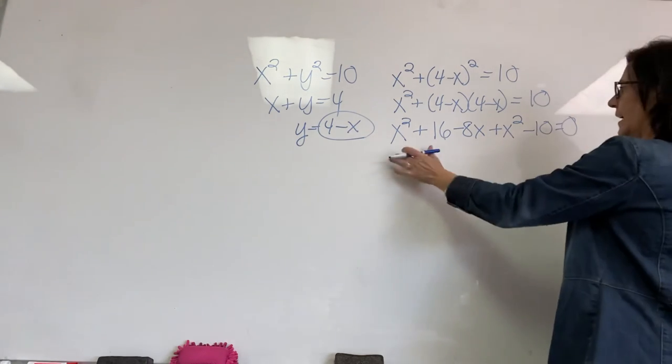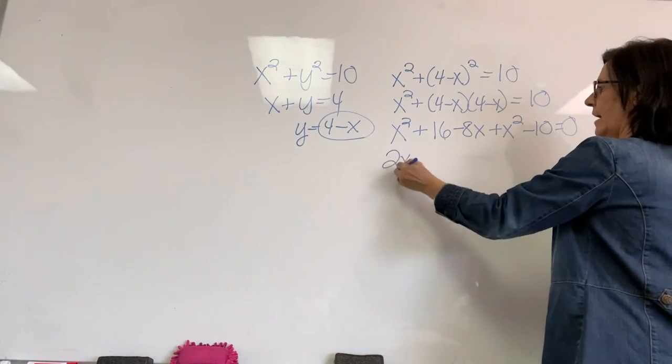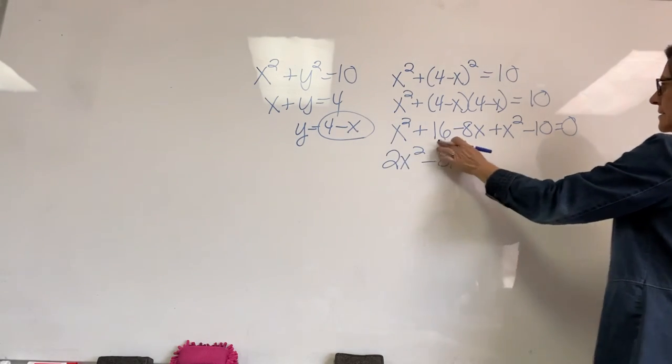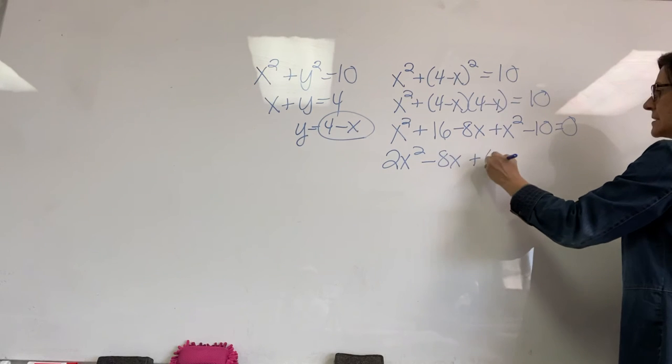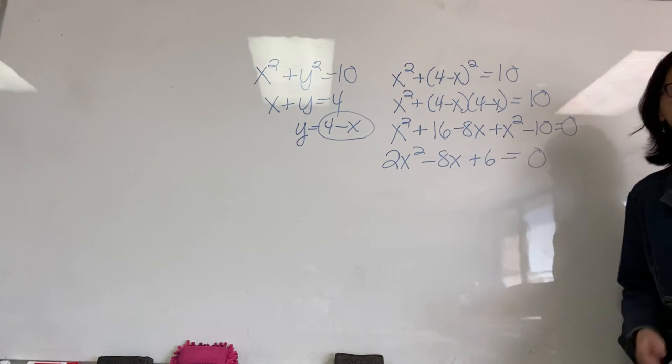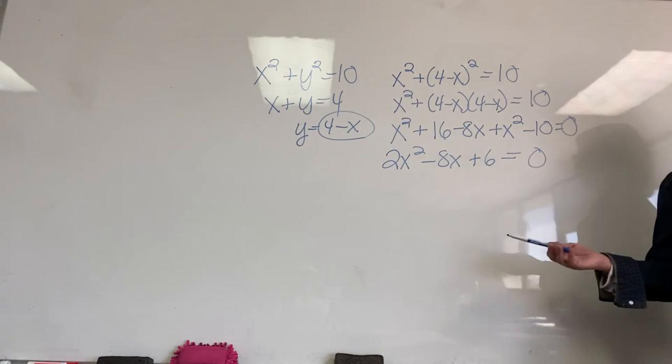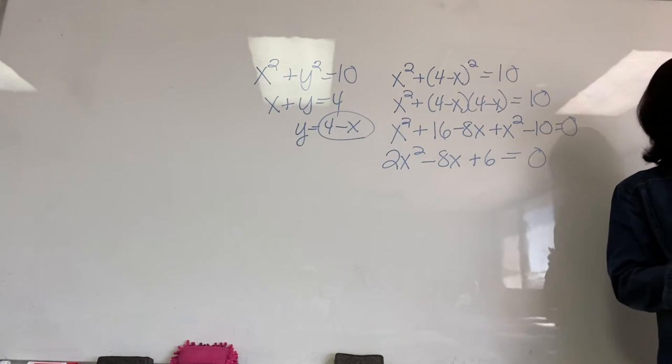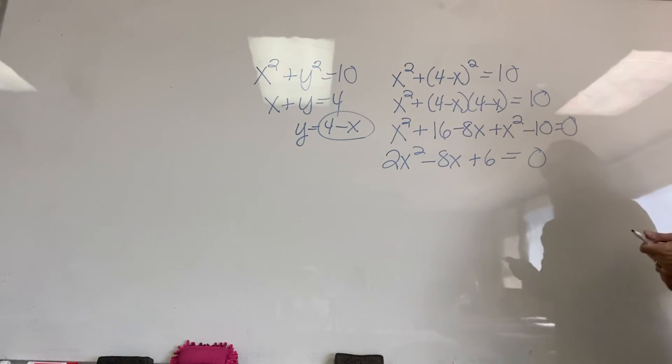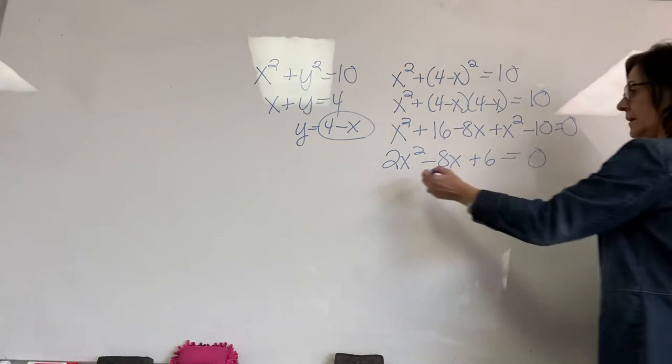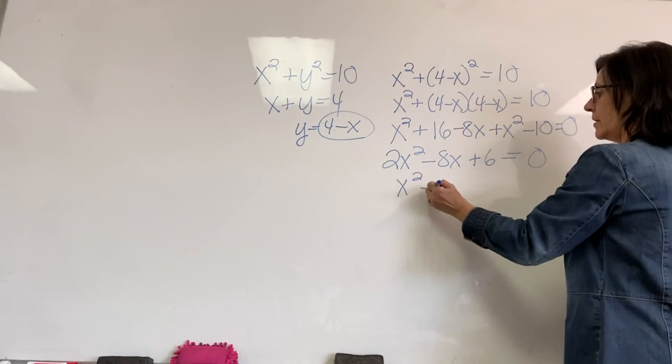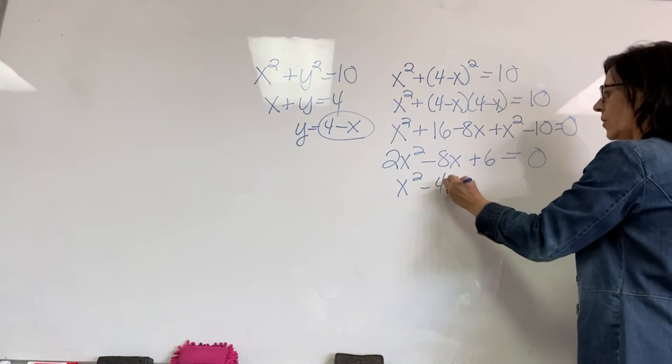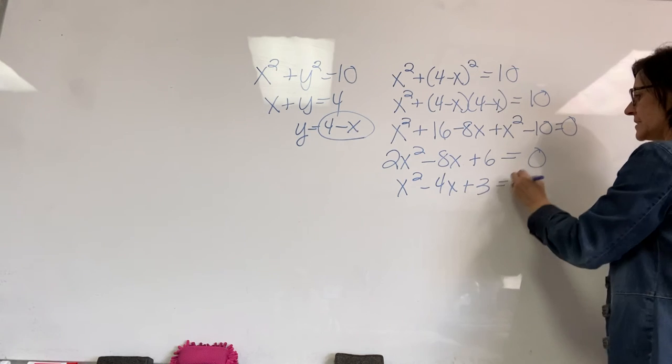I'm going to move that 10 over through subtraction. Set it equal to 0. So, I combine my like terms. We have 2x squared minus 8x plus 6 equals 0. I could leave it like this, plug it into the quadratic. However, I can simplify a little bit. So, I'm going to divide every term by 2. So, we end up with x squared. Really, I'm sort of factoring out a 2. Minus 4x plus 3 equals 0.